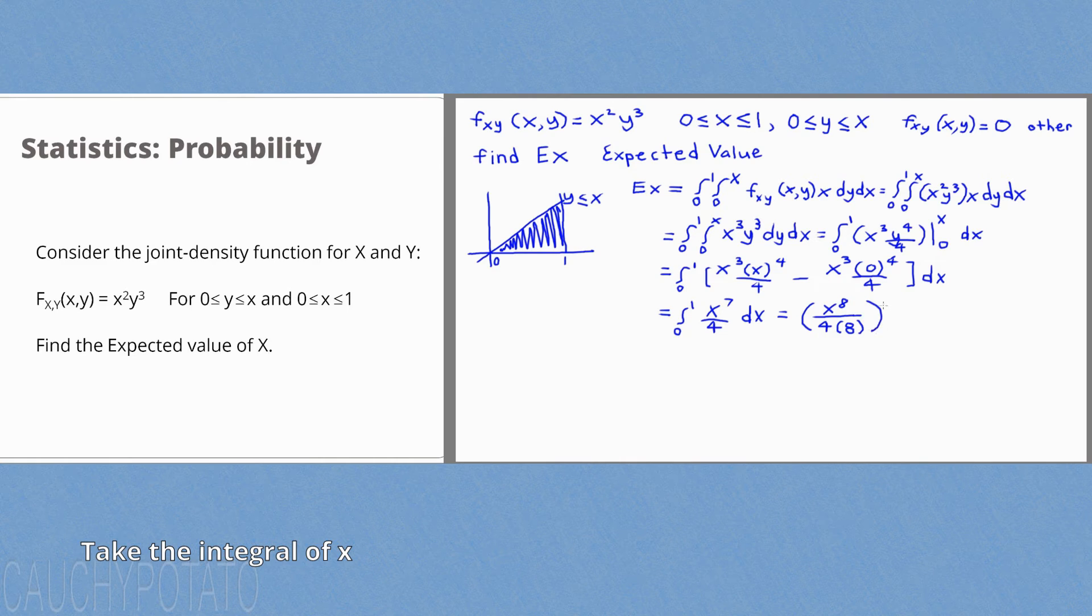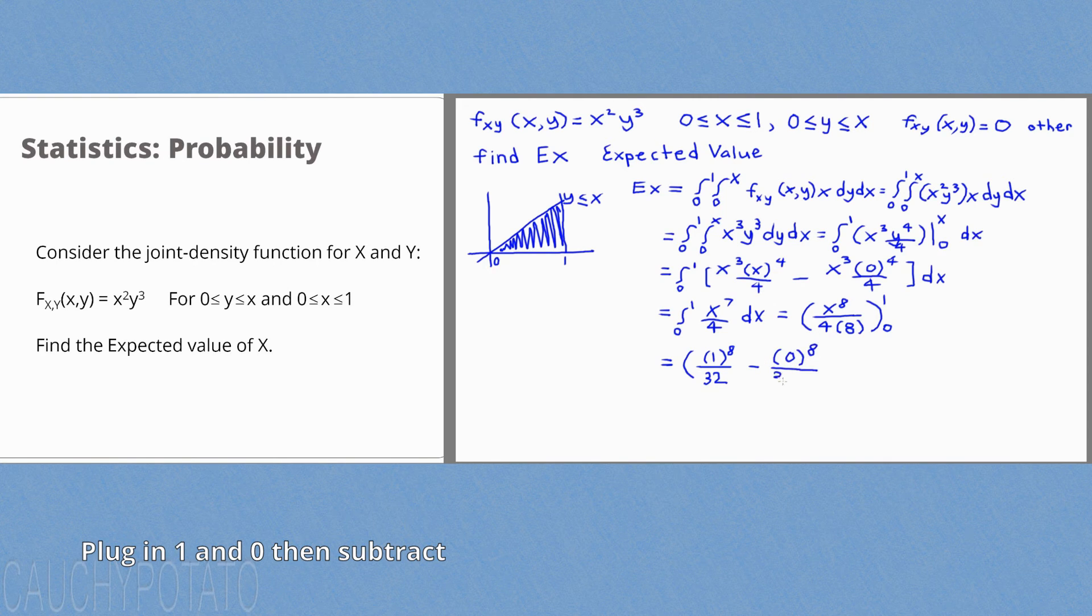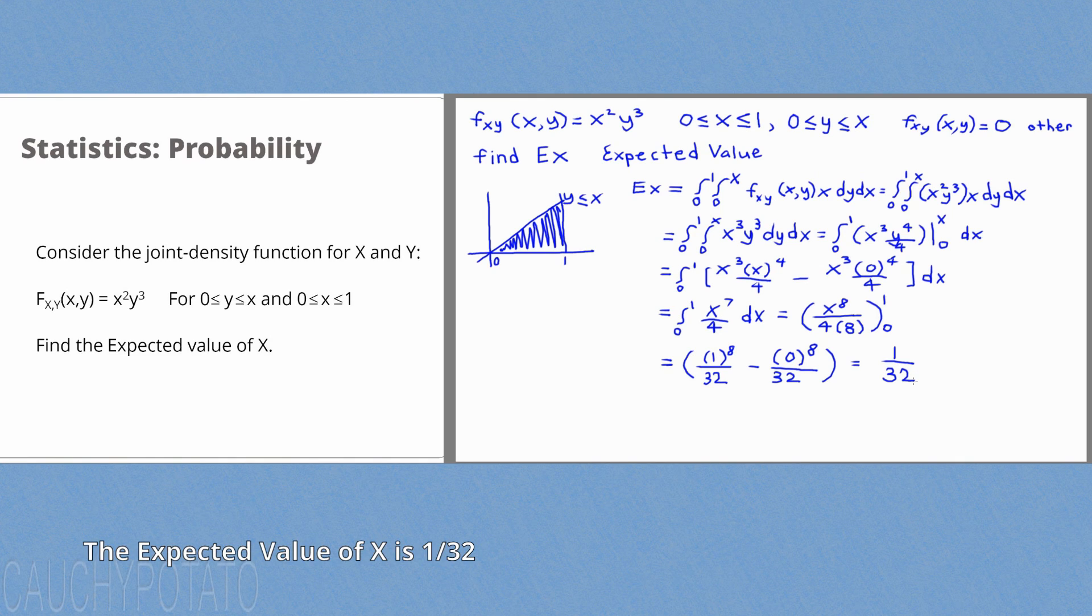Plug in 0 to 1. Plug in 0 and 1, 1 first, 0 on the next. This equals 1 over 32. So the expected value of x is 1 over 32.